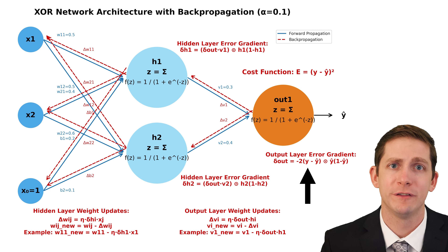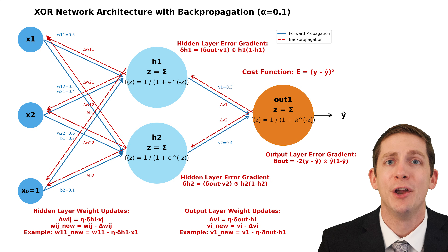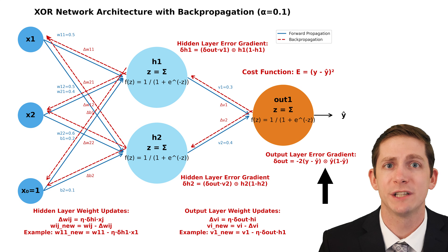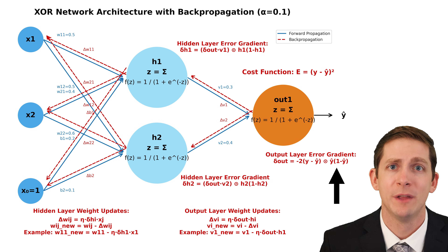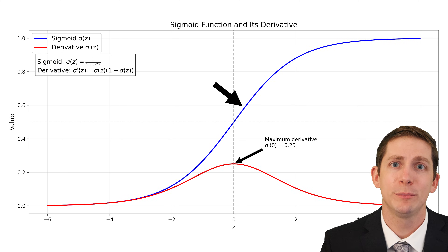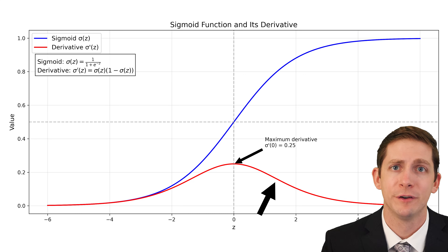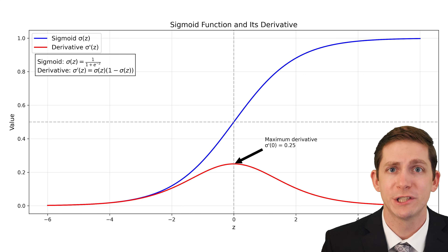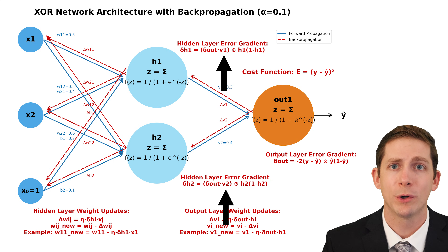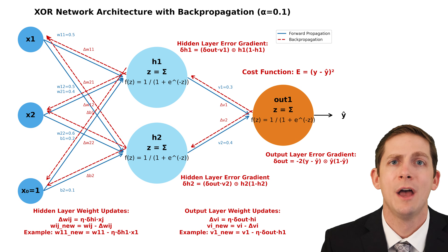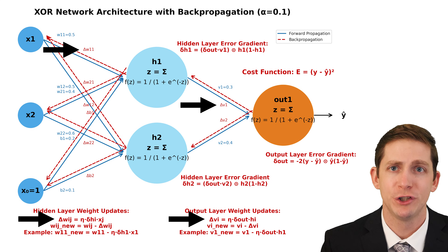The output error gradient is the derivative of the cost function times the derivative of the sigmoid function. The derivatives result in a simple mathematical equation. Note that while the piecewise operation symbol typically indicates an elementwise operation across a matrix, in this case we're working with scalar values, so it simply represents multiplication. The derivative of the sigmoid function reaches its maximum value of 0.25 when the sigmoid function passes through zero. To calculate the hidden layer error gradient, three terms are multiplied together: the output error gradient, the corresponding weight, and the derivative of the sigmoid function. From there, we are ready to calculate the change in weight values.